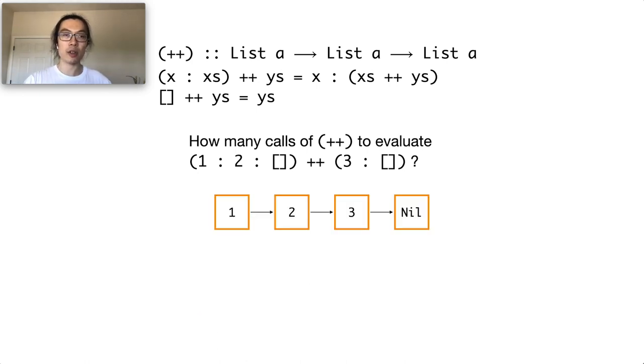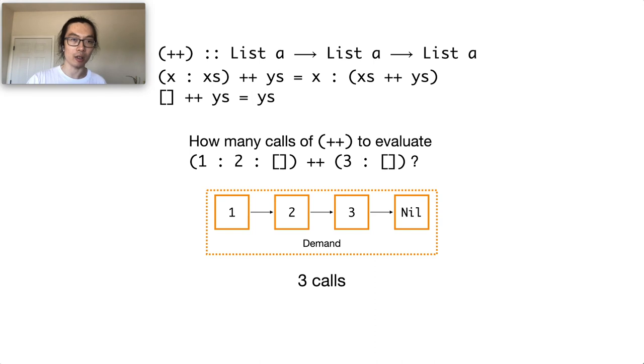In the case that every cell in the list is in demand, we will need to call append three times. So the answer is A, 3 calls.